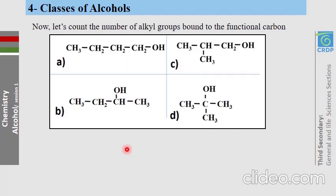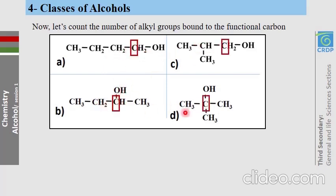Now let us find the classes of alcohols. First, identify the functional carbon of each molecule — it is the carbon bound to the OH group. In molecule A, only one alkyl group is connected to the functional carbon, so we say it is a primary alcohol.